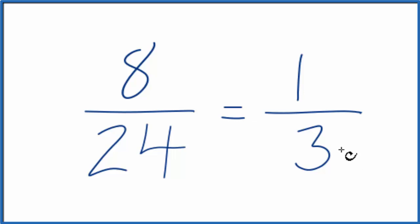3 times 8, 24. So simplifying the fraction 8/24, I get 1/3. And these are equivalent fractions.